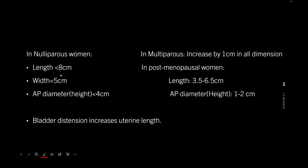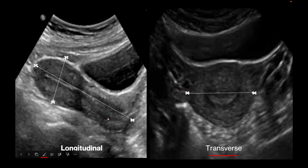Uterine cervix length is measured in the mid-sagittal plane from the internal os to the external os. The cervix extends from the external os to the internal os. The internal os is the point where the cervical canal opens into the uterine cavity, and the external os is the junction between the vagina and the uterus.